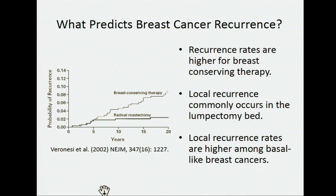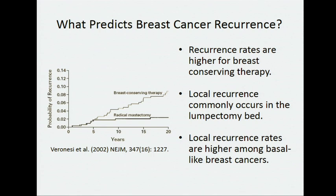This is a curve from a randomized trial of breast conserving therapy versus radical mastectomy. On the y-axis is the probability of recurrence, and on the x-axis is the number of years. Even 15 to 20 years after surgery, individuals having breast conserving therapy have a much higher probability of recurrence. Overall survival is the same for the two groups because an additional resection can occur, but this difference in recurrence rates has been the subject of some interest, specifically with relation to this concept of field effects. We also know that when local recurrence does occur, it commonly occurs in the lumpectomy bed, and that the rates tend to be higher in some subtypes of breast cancer, specifically basal-like breast cancers.